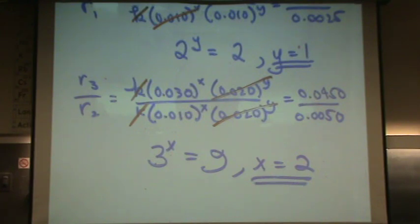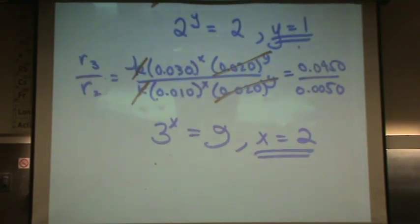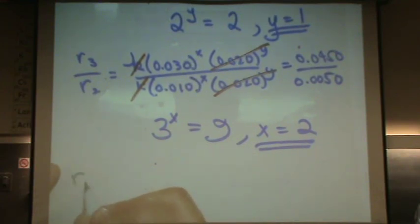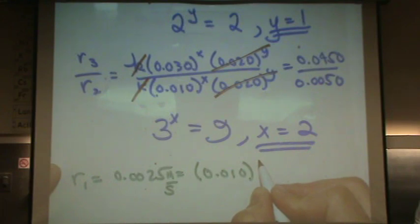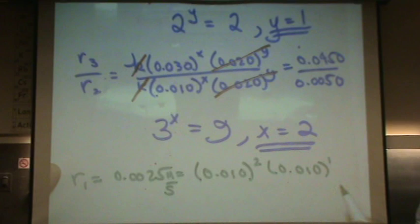If the question also asks you to find k, you'd pick your favorite number from one to three. What's that for you? One. Okay. So, we go rate one equals 0.0025 from the table for the rate. That's in molarity per second. Times 0.010 squared times 0.010 to the first power.